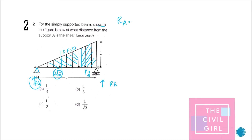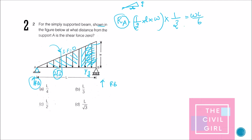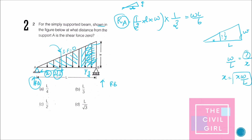Ra equals one third of the total load. The total load for a triangular load is the area of the triangle: half × L × w. So Ra = wL/6. To find the distance x from A where shear force is zero, using similar triangles — for a length L the intensity is w, so for length x the intensity is x·w/L.